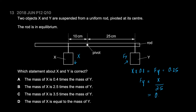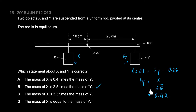FY divided by FX equals 0.4, so FY is 0.4 times FX — it's 40% of whatever force X is. In other words, mass X is 2.5 times the mass of Y. Double-checking: rearranging the moment equation makes FX equal to 2.5 times FY, so X is indeed 2.5 times the mass of Y. Since forces are proportional to masses, the answer is B.